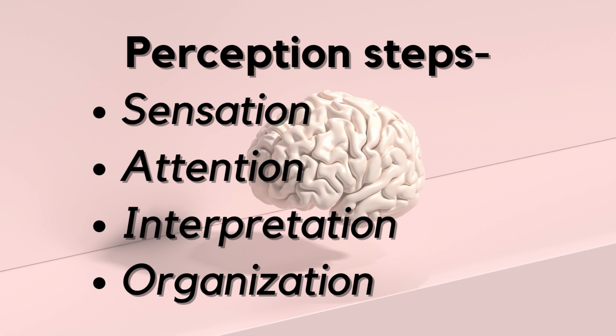Sometimes our perceptions can be influenced by our past experiences, expectations, or even our emotions. For example, if you see a snake, you might feel afraid because your brain associates snakes with danger.